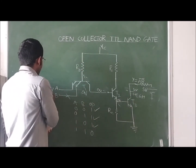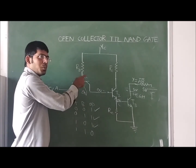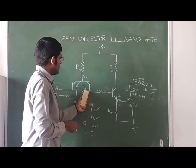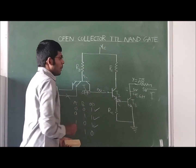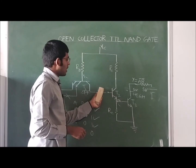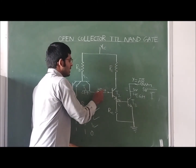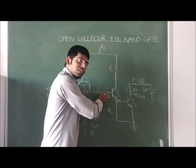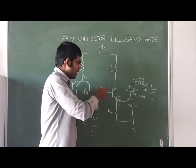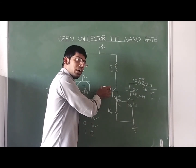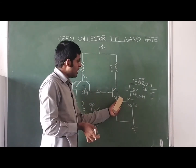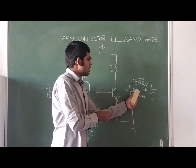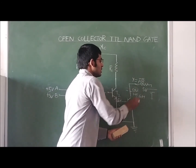Fourth case: both inputs are high (5V). T1's base voltage equals its emitter voltage with respect to both A and B, so T1 is in OFF condition. With T1 OFF, we observe a high voltage at its collector. This high voltage is applied to T2's base; since T2 is in CC configuration, the same 5V appears at T2's emitter. T3's base receives 5V, so T3 is in ON condition, and the output is 0 volts — low.